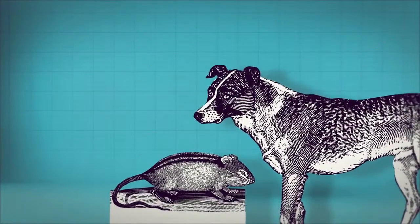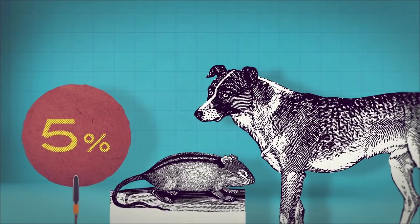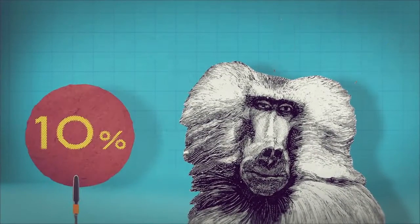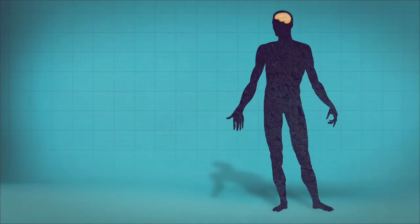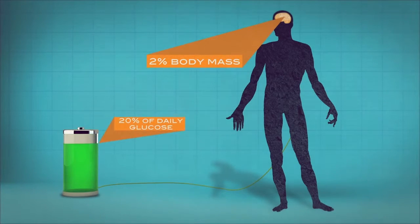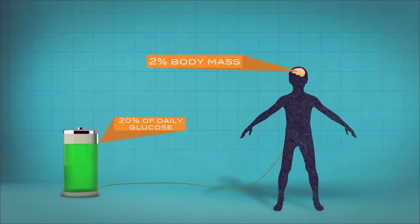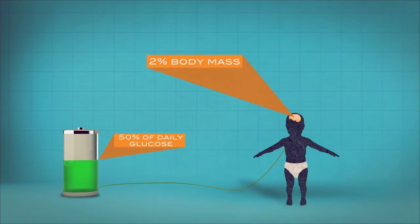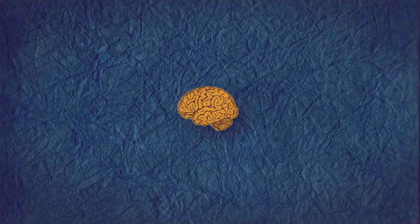Rodent and canine brains consume 5% of total body energy. Monkey brains use 10%. An adult human brain, which accounts for only 2% of the body's mass, consumes 20% of the daily glucose burned. In children, that figure is 50%, and in infants, 60%. This is far more than expected for their relative size, which scale in proportion to body size.